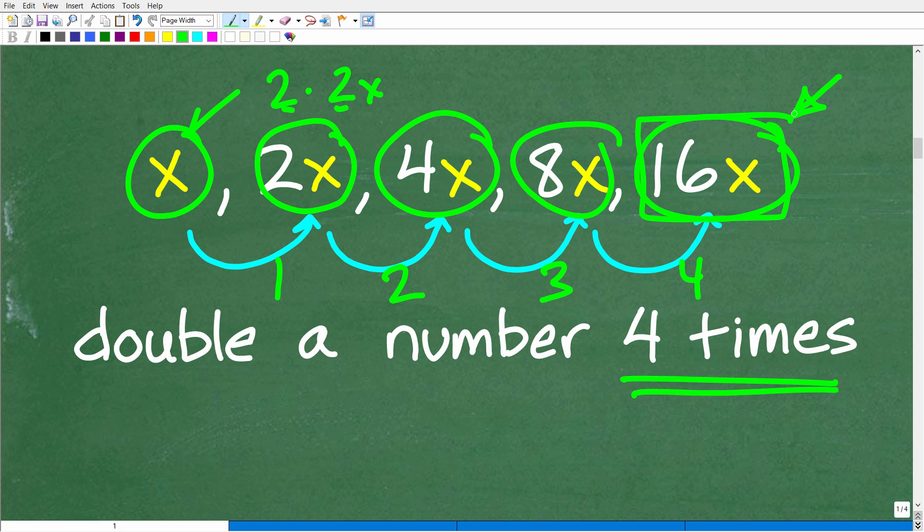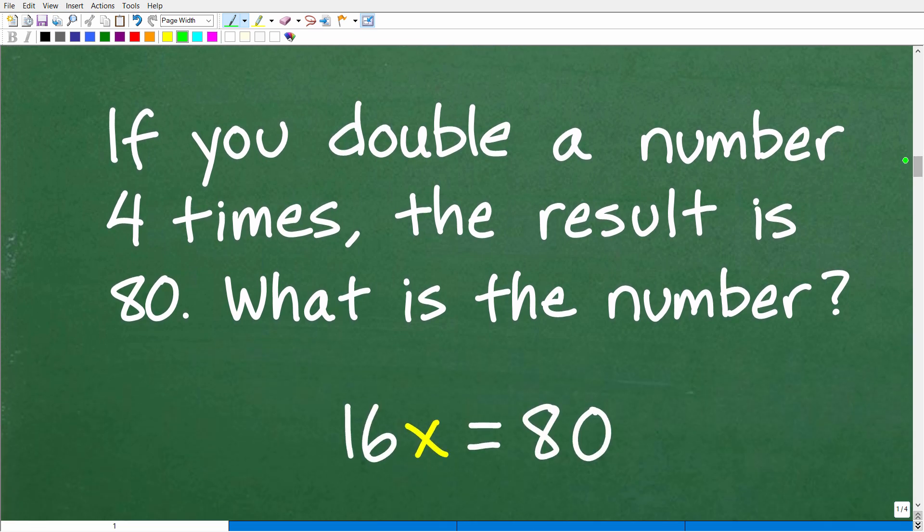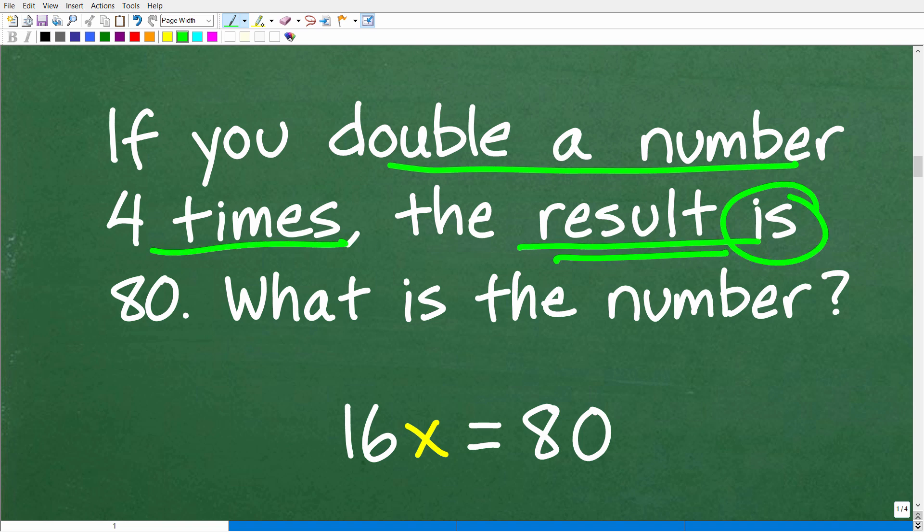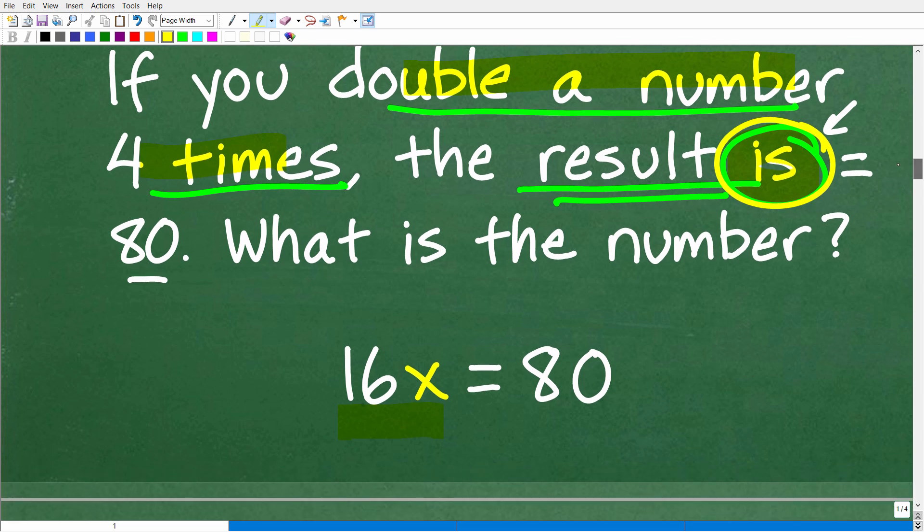Now, this is not going to do us any good unless again, we can build an equation. And the only way we're going to be able to build an equation is to go back to the problem. And the problem states the following, right? If you double a number four times, the result is, and the magic word here is this word right here. This is an awesome word in algebra word problems because is is always the equal sign. Okay. So if we double a number four times, the result is, so this is going to be translated as equal sign is equal to 80. Okay. So we double this number, X four times, we got 16 X right here, right? So this is what we got when we doubled this number four times, 16 X, and the result is 80.